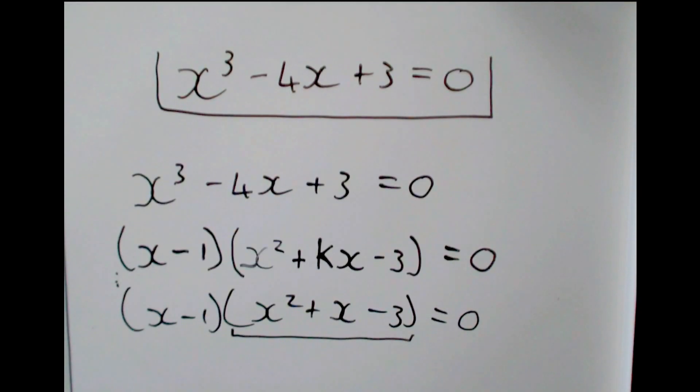So if this was, let's say, a 2, if there was a 2 here, then we'd be able to factorize this and we would have to factorize it to get our answer. So because that doesn't factorize, our answers are